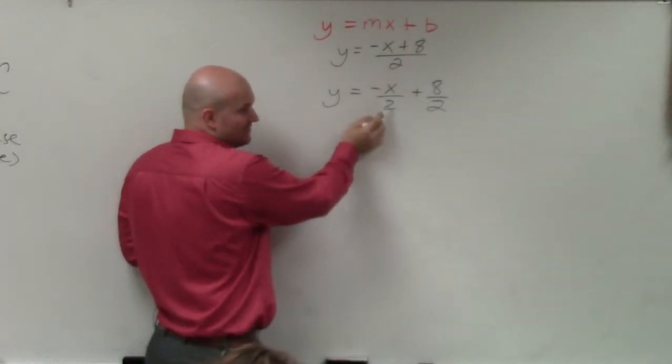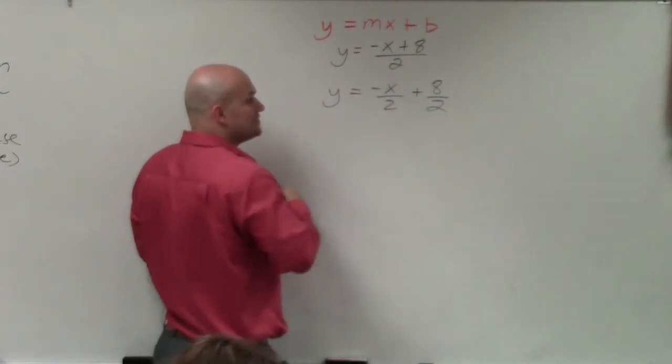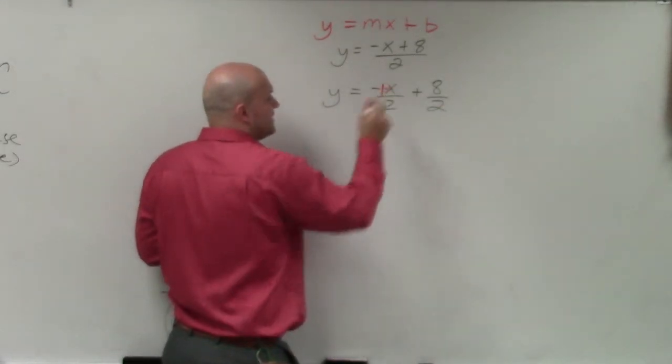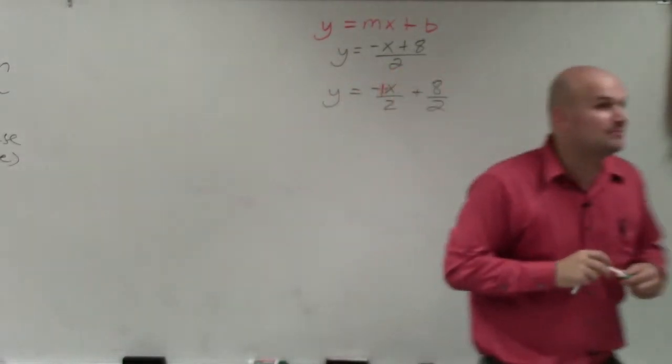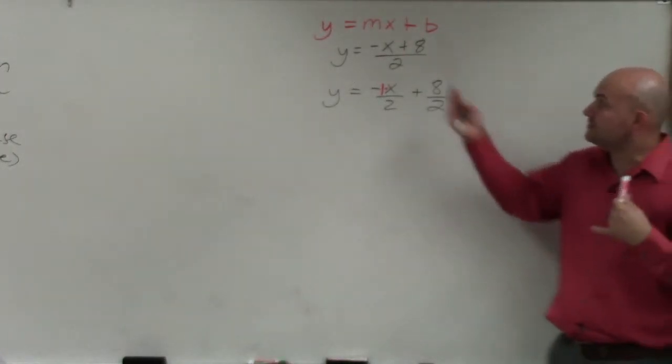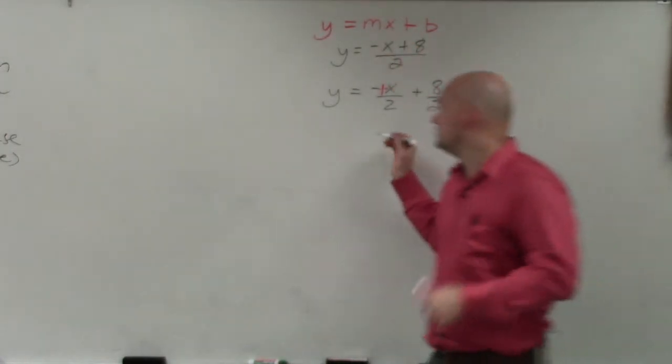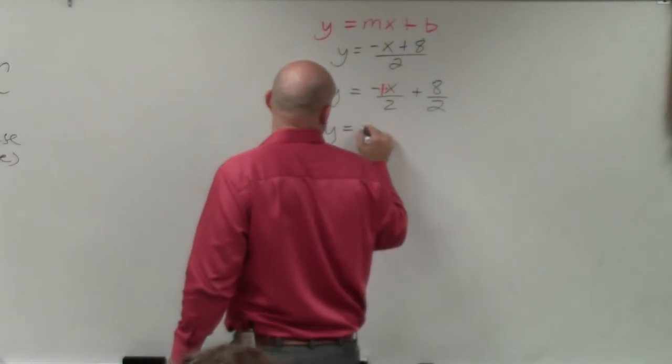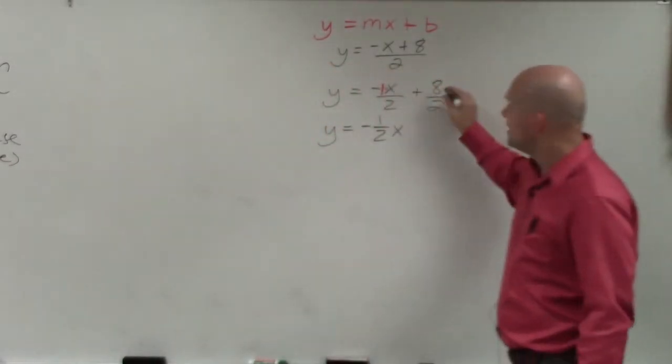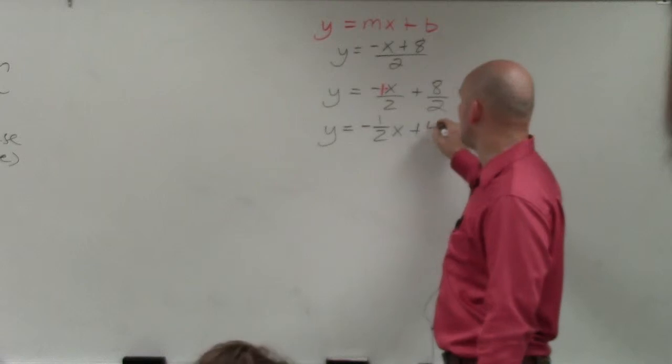You can't divide 2 into x. However, we can understand that there is a negative 1 being multiplied by the x. So when you want to rewrite this and understand what is m, we can simply rewrite this as negative one-half x. And then 8 divided by 2 is 4.